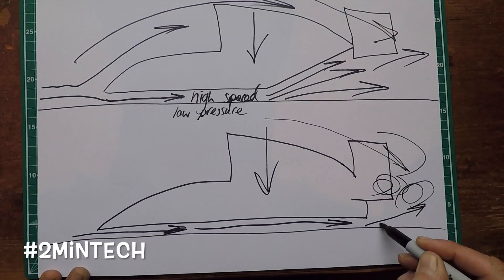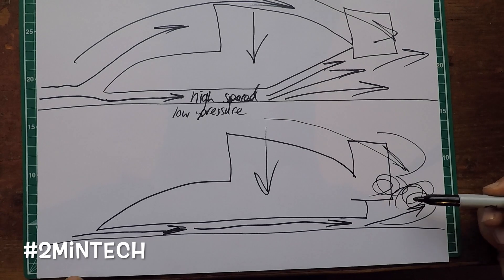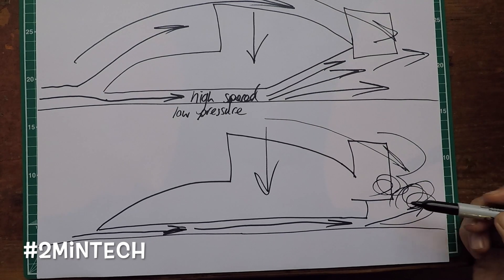It starts to mix, try to fill in this massive void behind the car. Massive turbulence creates huge amounts of drag and that lowers the efficiency massively of the aerodynamics of a Formula One car. That is why we have a diffuser on an F1 car.